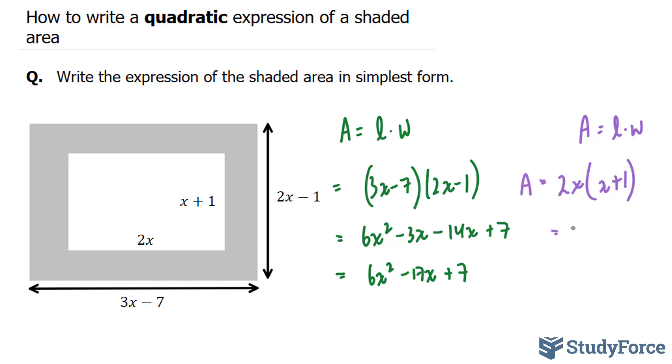So we have this monomial times this binomial, 2x squared plus 2x. And that right there represents the expression for the area of this white rectangle.